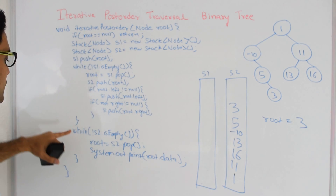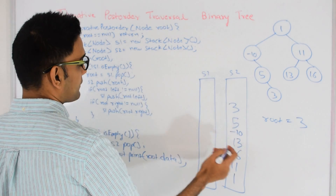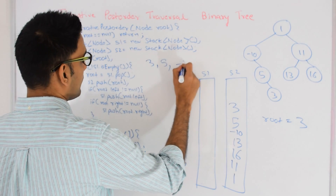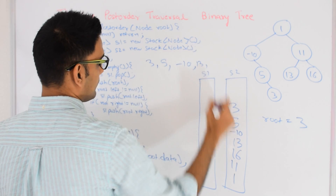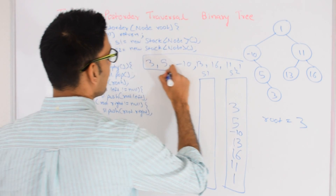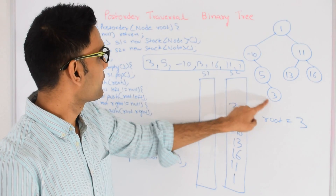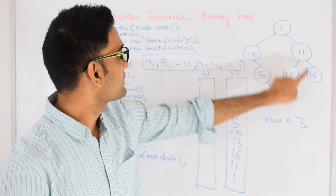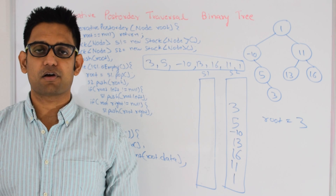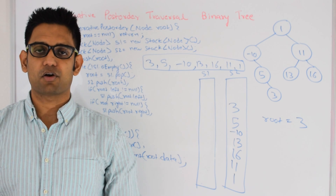We come to the next part. While Stack 2 is not empty we keep popping data out of Stack 2 and printing them: 3, 5, -10, 13, 16, 11, and 1. This is my post-order traversal for this tree. If you want the running code for this problem, go to my GitHub link github.com/mission-piece-interview-wiki. And if you want to check out similar questions, go to my YouTube channel youtube.com/user/tusharaya2525. Thanks for watching this video.